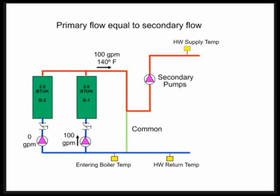100 GPM in my secondary loop, going out at 140 degrees, and I have no flow in the common pipe. Because I have 100 GPM going out into my secondary loop, I also have 100 GPM coming back. And because in this scenario we're perfectly loaded, which rarely happens, we have a 100 degree return water temperature coming back. That means my entering boiler temp is also 100 degrees because I have 100 GPM going into my boiler.